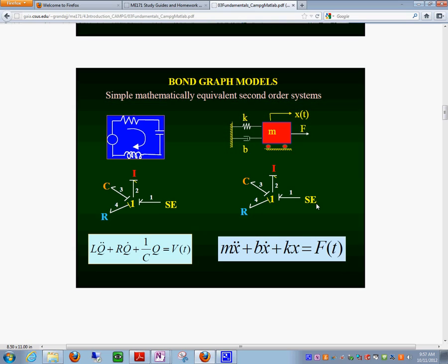However, now we come to this. These equations, as you see on the bottom, are the same ones we just showed a moment ago. And there has to be an equivalence between this bond graph that corresponds to this circuit and this bond graph that corresponds to this mechanical system and these equations.